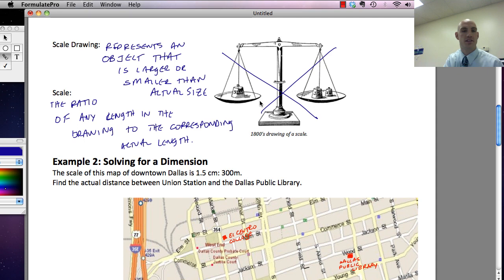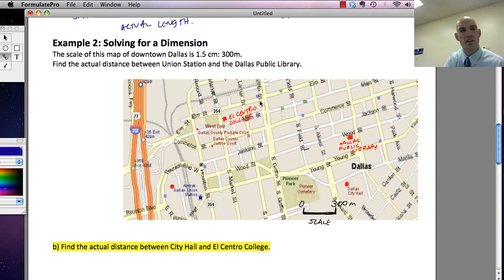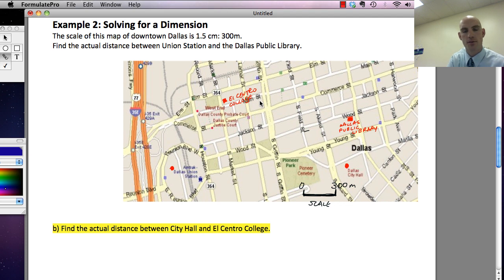The most common example of this is a map. And so that's what we're going to do in this. The scale of this map is 1.5 centimeters equals 300 meters. Now obviously this is going to be a little bit tricky for me to try to show you this as a measurement. But we're going to go in about Ciana. I'm going to show you kind of how it works. Find the actual distance between Union Station and the Dallas Public Library. Well when we're doing this, what I'm saying is, here is Union Station over here. And here is Dallas Public Library. So I want to measure this distance here.